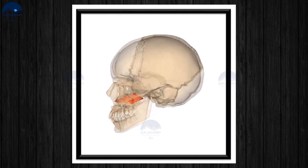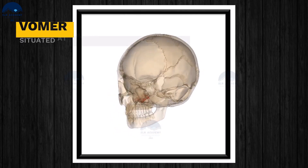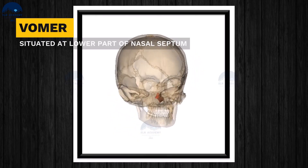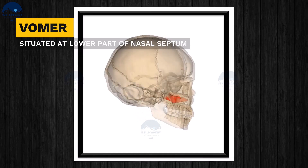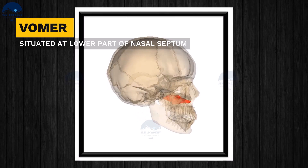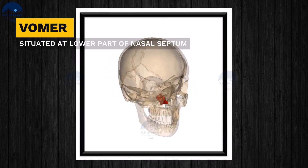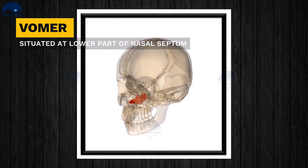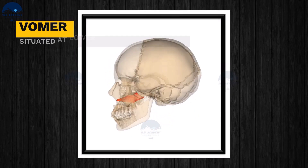Vomer. The vomer divides the nasal cavity. It is situated at the lower part of the nasal septum.